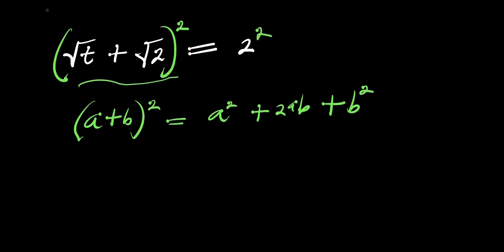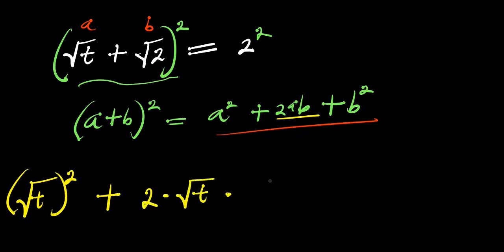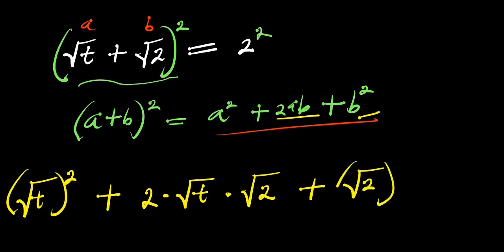In this particular case, a is root t and b is root 2. Substituting everything in: we get a squared, that is root t to the power of 2, plus 2 times ab, that is 2 times root t times root 2, plus b squared, that is square root of 2 to the power of 2.